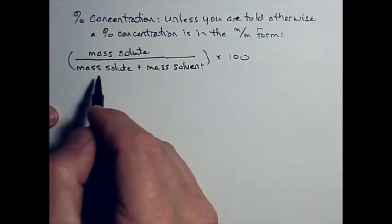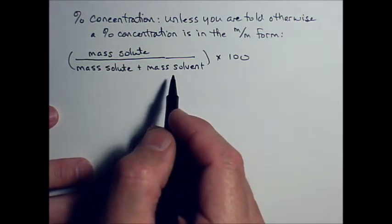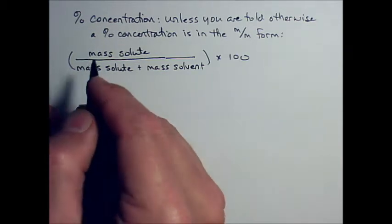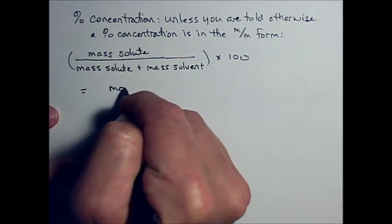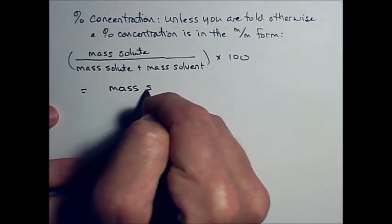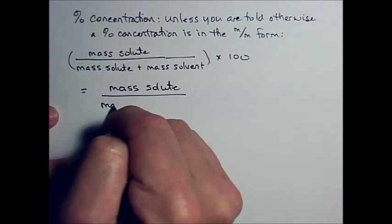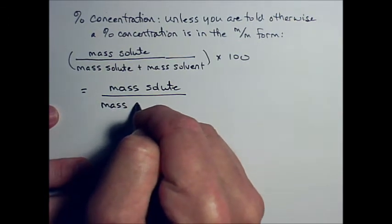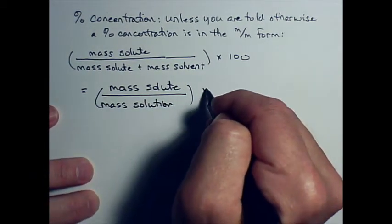Now, the mass of the solute and the mass of the solvent together make up the mass of the solution. So, this is equal to mass of the solute over the mass of the solution times 100.